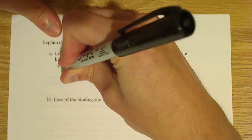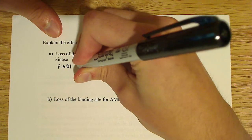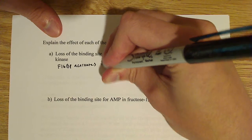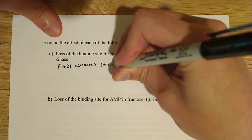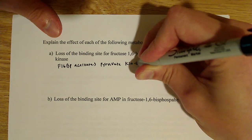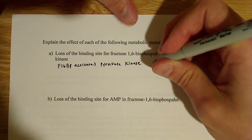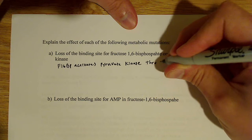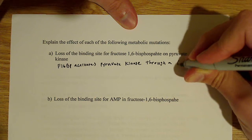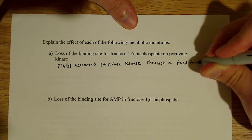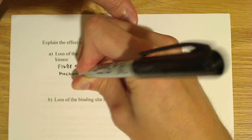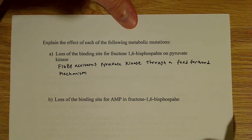What F1,6-BP does is it activates pyruvate kinase — you might remember that from my previous videos. So F1,6-bisphosphate activates pyruvate kinase, and it activates pyruvate kinase through what's known as a feed-forward mechanism.